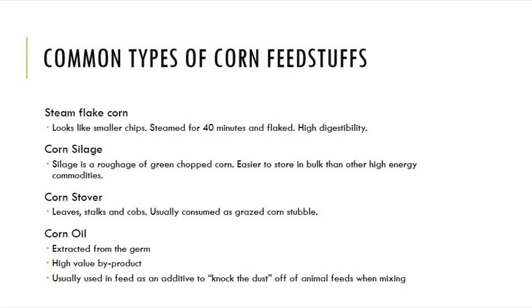However, when we feed corn stover to livestock, it is usually consumed as grazed corn stubble — releasing the cows out onto an old corn field in the late fall after harvesting. Corn oil is a feedstuff that is extracted from the germ and is a very high value product used a lot in processed foods and home kitchen use. However, we can also use it in feedstuffs as an additive to knock the dust off the grain when mixing the feedstuffs.